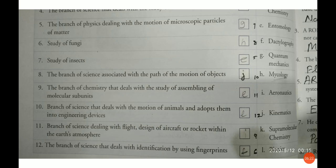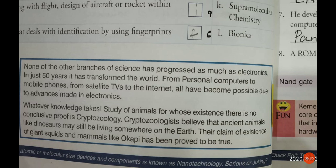The branch of science dealing with the flight design of aircraft and rockets within the Earth's atmosphere is aeronautics. None of the other branches of science have progressed as much as electronics — in just 50 years it has transformed the world, from personal computers to mobile phones, from satellite TV to the internet, all made possible due to advances in electronics. Cryptozoology is the study of animals for which there is no conclusive proof. Cryptozoologists believe that ancient animals like dinosaurs may still be living somewhere on Earth. Their claims of the existence of the giant squid and the mammal-like okapi have been proved to be true.